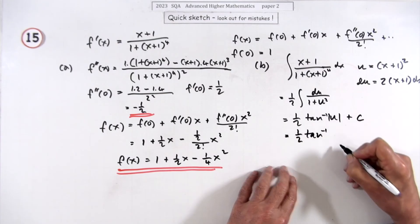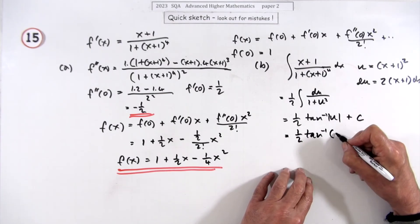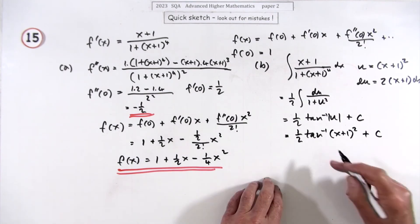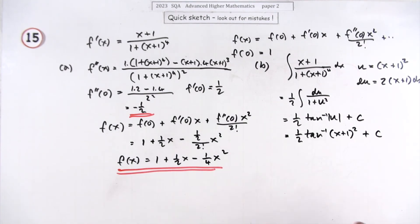So that's going to be (1/2)tan⁻¹ of, just popping that back in, (x+1)² plus C. So I think for this part here that was the end of it.